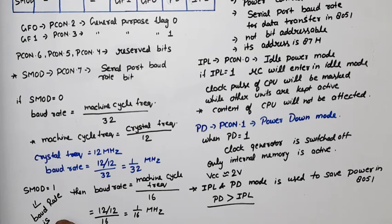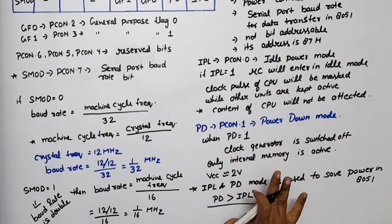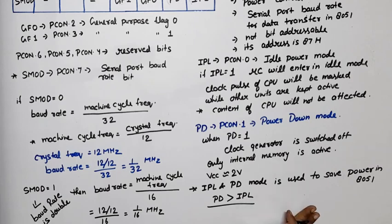So now by using these two bits we have seen how it controls power, and by using SMOD how it controls the baud rate. Means PCON is used for both power control as well as baud rate control.